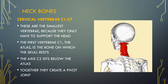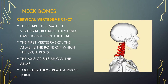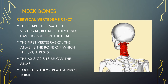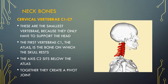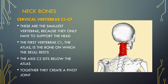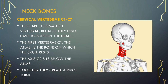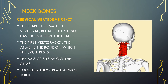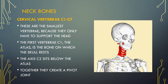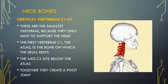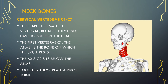C1 through to C7 are the symbols for the cervical, or neck vertebrae, the upper 7 vertebrae in the spinal column. These are the smallest vertebrae because they only have to support the head. The first vertebra, C1, the atlas, is the bone on which the skull rests. The axis, C2, sits below the atlas. Together they create a pivot joint.